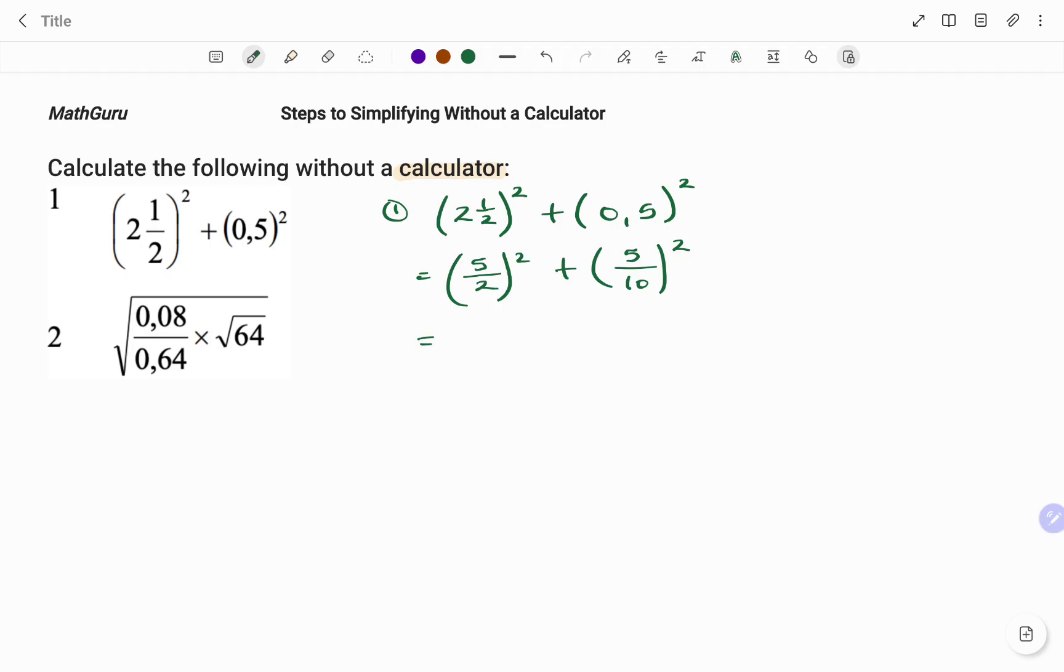The next step is to apply the laws of exponent that states that if a variable or a number is raised to the power, the power multiplies or is being affected by all the terms inside the bracket. So this would be 5 squared, because 5 has an invisible power of 1, so 2 times 1 is 2 over 2 to the power of 1 times 2, which is 2.